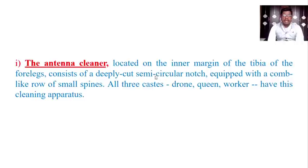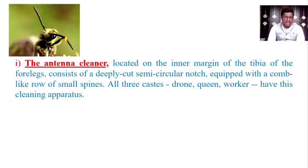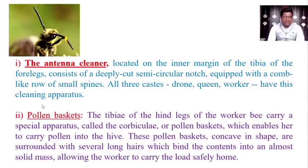The antenna cleaner is located on the inner margin of the tibia of the foreleg and consists of a deeply cut semi-circular notch equipped with a comb-like row of small spines. All three castes — drone, queen, and workers — have this cleaning apparatus. The foreleg has equipment to clean the antenna and remove pollen from the head, eyes, and wings. Another very important structure is the pollen basket on the hind legs. The tibia of the hind legs of the worker bees carries a special apparatus called the corbiculi, or pollen basket, which enables the worker to carry pollen into the hive.